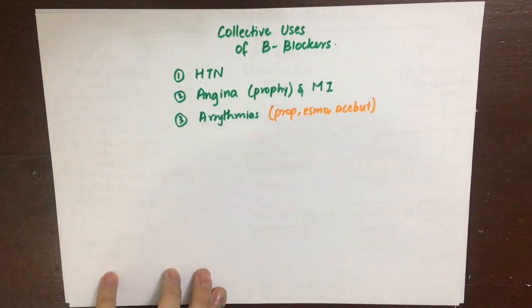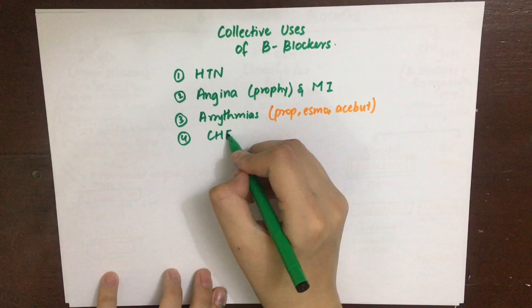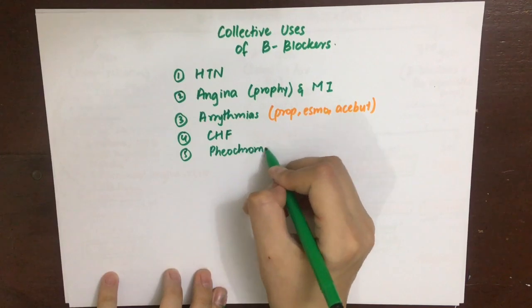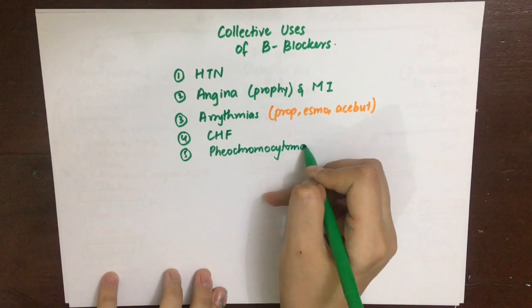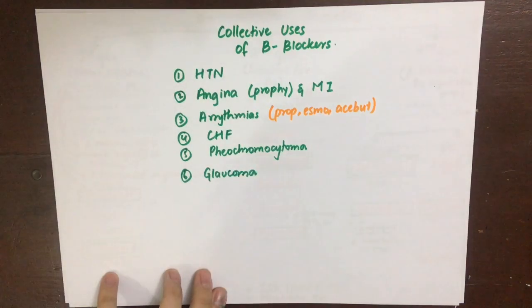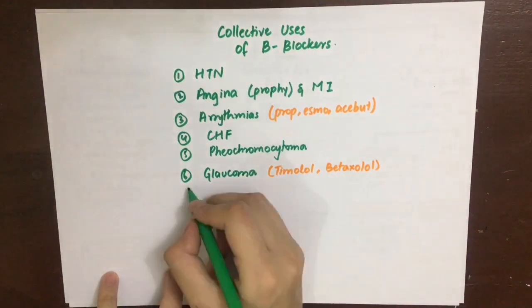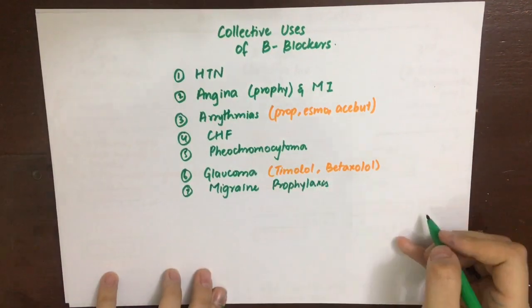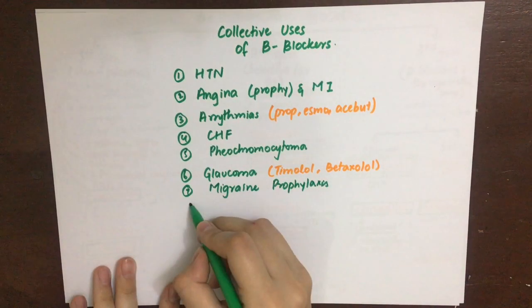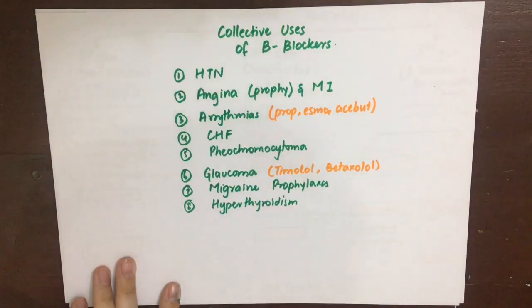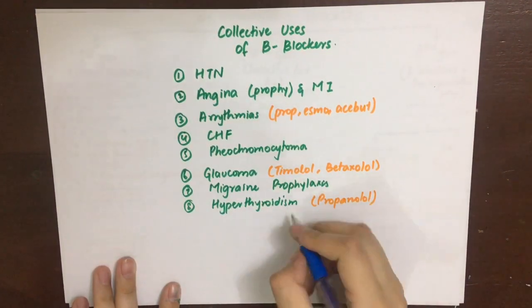Beta blockers are used in arrhythmias due to their membrane-stabilizing effect — mainly propranolol, esmolol, and acebutolol. They are used in congestive heart failure by inhibiting the renin-angiotensin-aldosterone system, reducing salt and water retention. They are used in pheochromocytoma to inhibit catecholamine effects on beta receptors, and in glaucoma where beta-1 blockade on ciliary muscles decreases aqueous humor secretion. In migraine prophylaxis, they decrease the tendency of cerebral blood vessels to over-dilate. In hyperthyroidism, chiefly propranolol, they inhibit peripheral deiodinase enzyme, preventing conversion of T4 to T3.